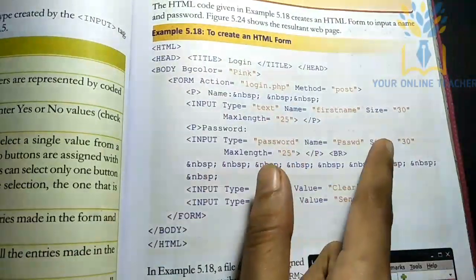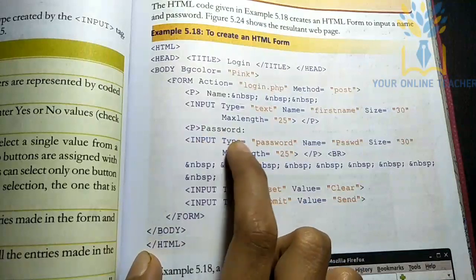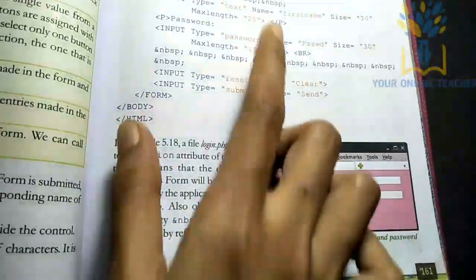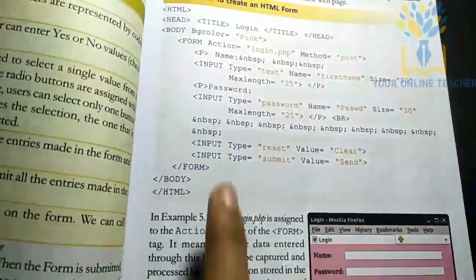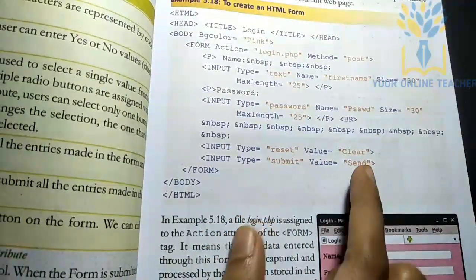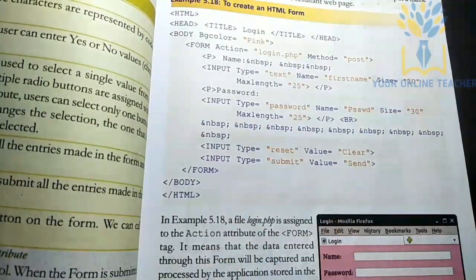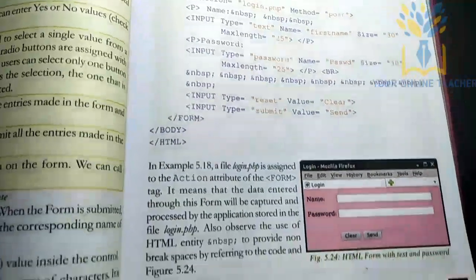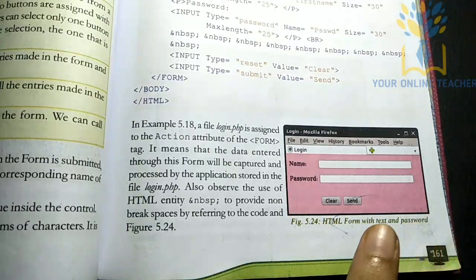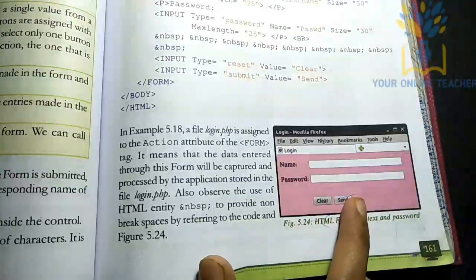You can use the password type for a password field with a name attribute. You can also use type 'reset' to reset the form, and type 'submit' to send the form. You can use the value attribute for submit and reset buttons.